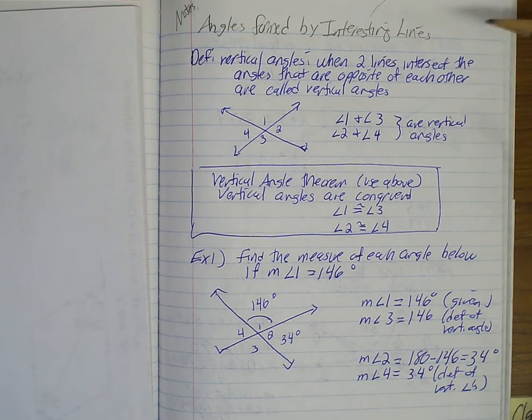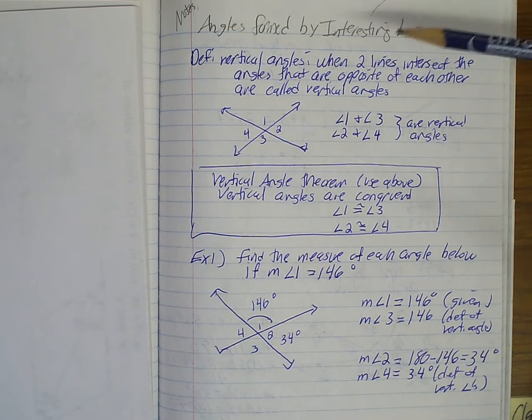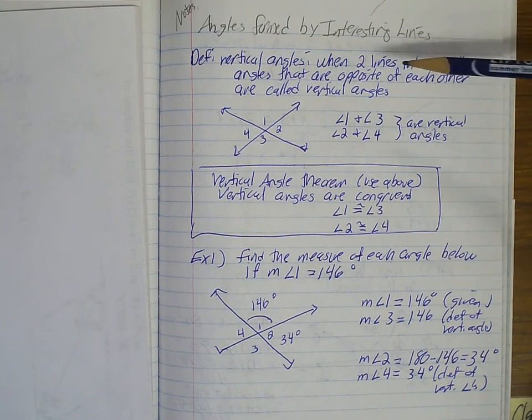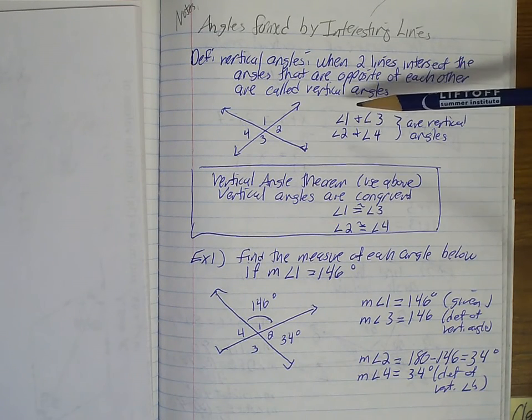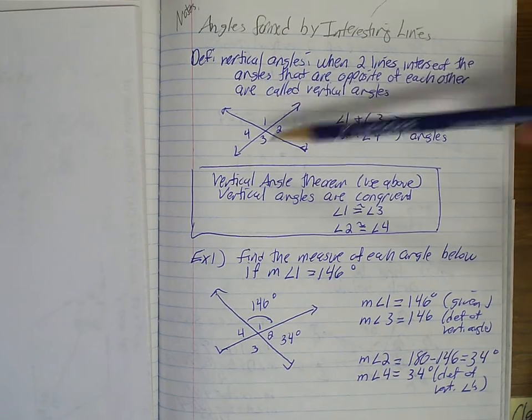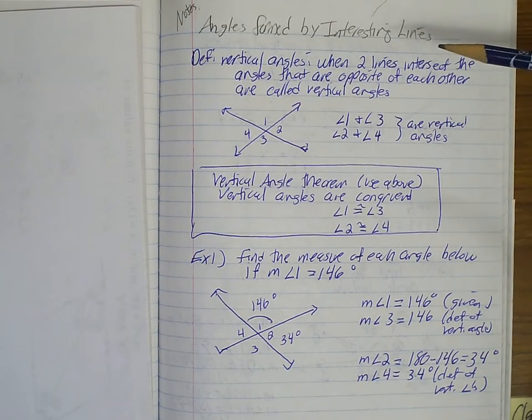So angles formed by intersecting lines. Definition: vertical angles - when two lines intersect, the angles that are opposite of each other are called vertical angles. This is pretty much a review. As you can see, angle 1 and angle 3, and angle 2 and angle 4.